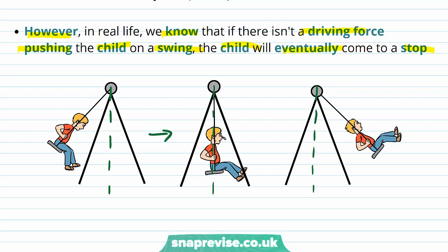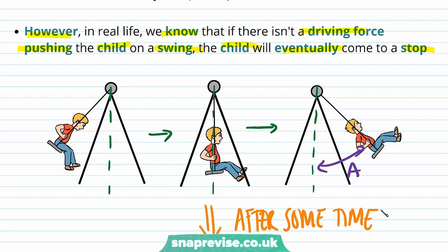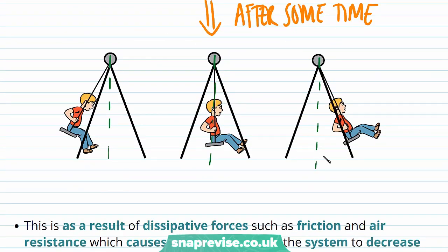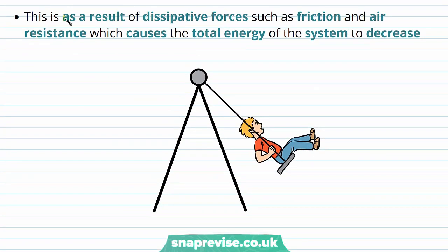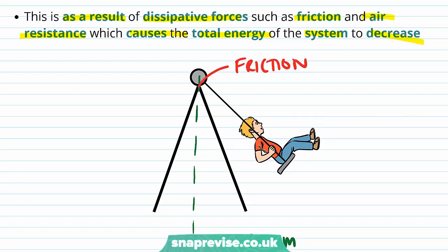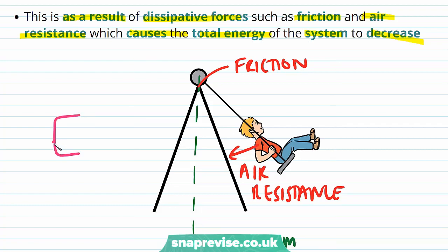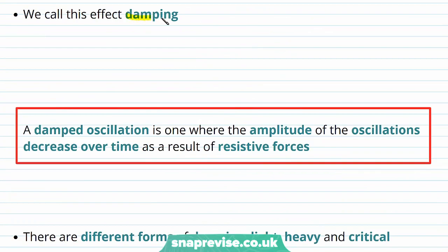Initially it's oscillating with a certain amplitude A, and after some time the amplitude of these oscillations is going to decrease, so it now has a smaller amplitude. This is as a result of dissipative forces such as friction and air resistance, which causes the total energy of the system to decrease. There's some friction acting between the swing and the bar of the swing, and there's also air resistance acting on the child as they swing through the air, causing the total energy of the system E to decrease.